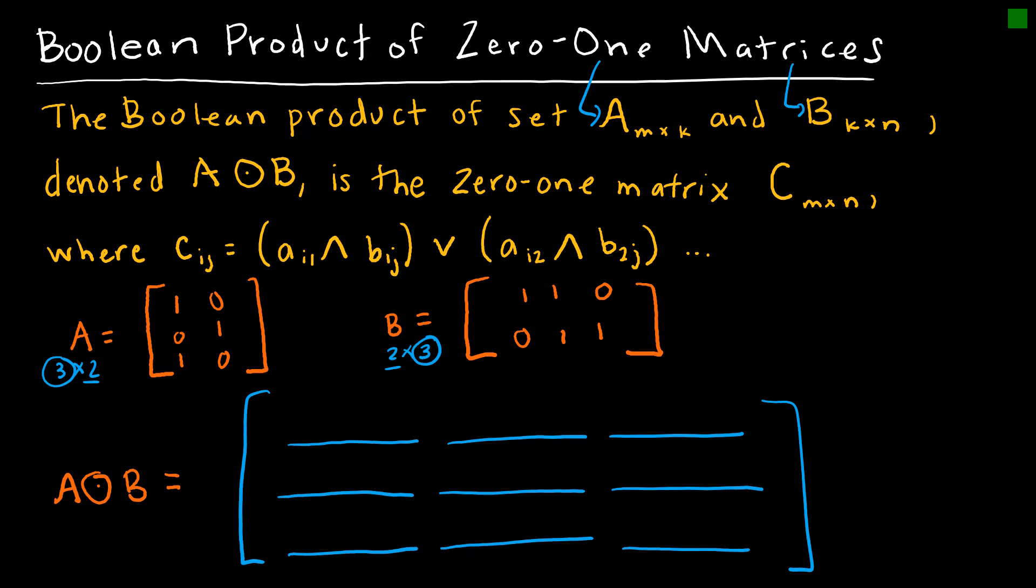So essentially what we're saying is in order to find this, I'm again going to take my 1, 0 and turn it into a column. So I'm going to think about it the same way. But instead of using multiplication and addition, I'm going to say 1 and 1, which is what I would do before if I multiplied, or 0 and 0. So it's the exact same thing I did before, but instead of using plus or multiplication, I'm using my meet and joins. So again, I'm going to take 1 and 1, or 0 and 1. And then I'm going to take 1 and 0, or 0 and 1. And I'm going to continue this for all of the other spaces.